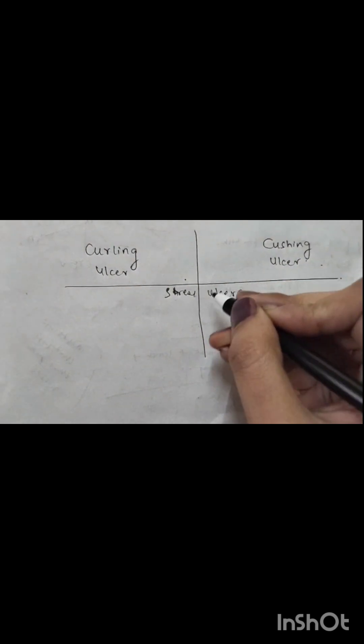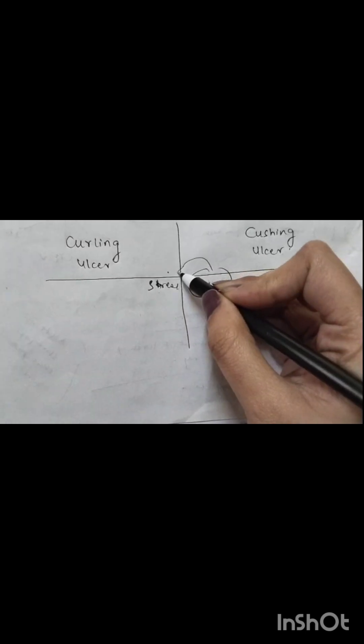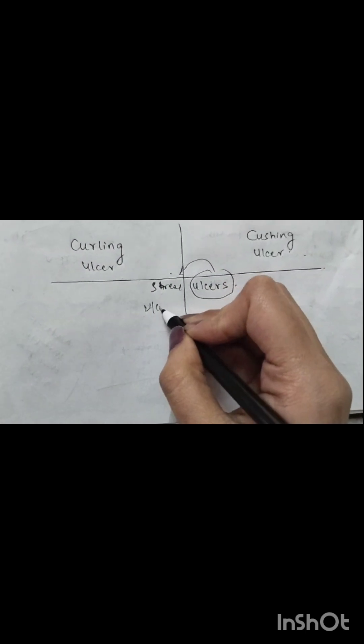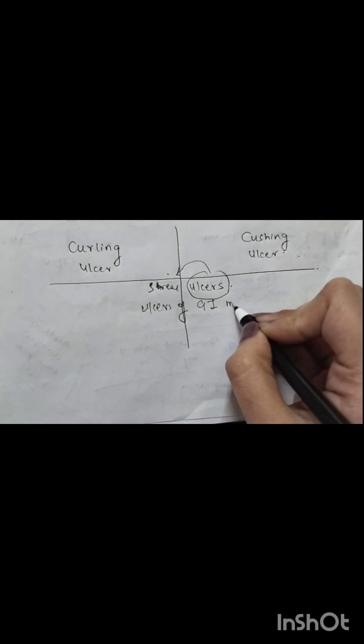Stress ulcers mean there is an increase in pressure in your body, which hampers the acid lining of your stomach, and then there is an ulcer in the mucosal lining of the stomach. The cause of these ulcers is stress, and both of them are ulcers of the GI mucosa.